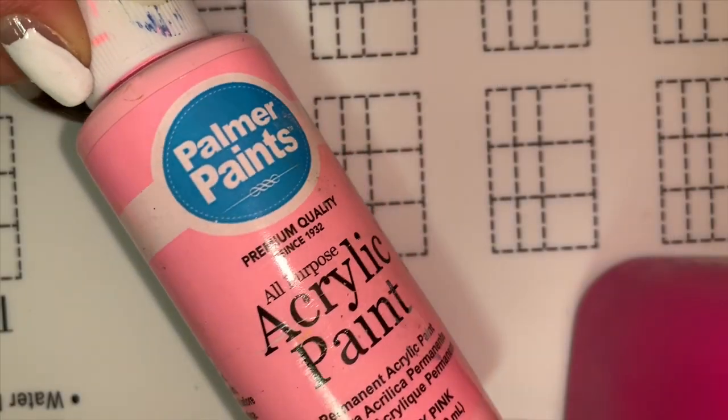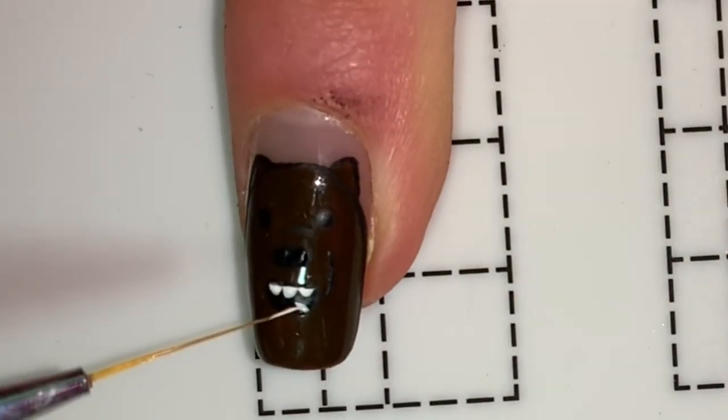Now with my white acrylic paint, I'm just going to do three teeth on the top of the mouth. For the tongue, I'm starting off with a white base and then going over it with light pink acrylic paint.